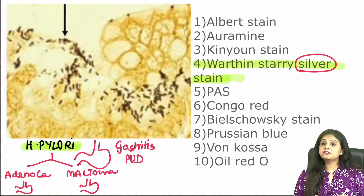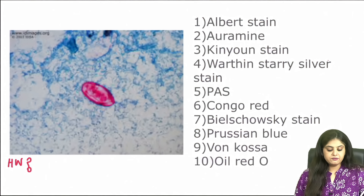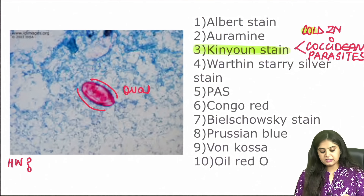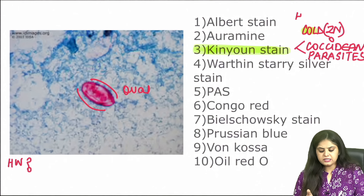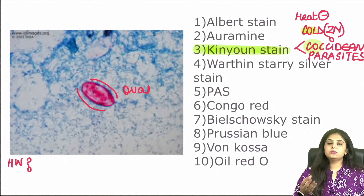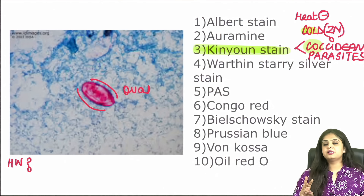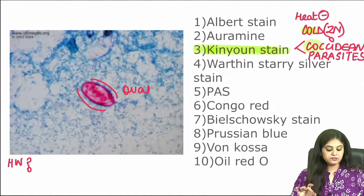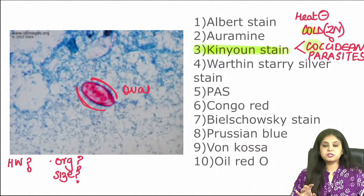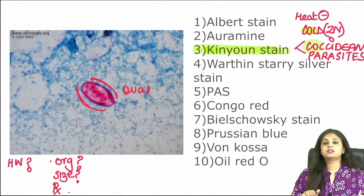In the next question, there is one oval-shaped organism; because the organism has come out red and the background blue, this is a classical Kinyoun stain. Kinyoun stain is the other name for the cold Ziehl-Neelsen stain — it is the same stain in which the heating step has been missed, so it is called 'cold.' This is done for the coccidian parasites. Your homework: the three coccidian parasites are Cryptosporidium, Cyclospora, and Isospora — tell me which organism this is, the size of the oocyst, and the treatment.